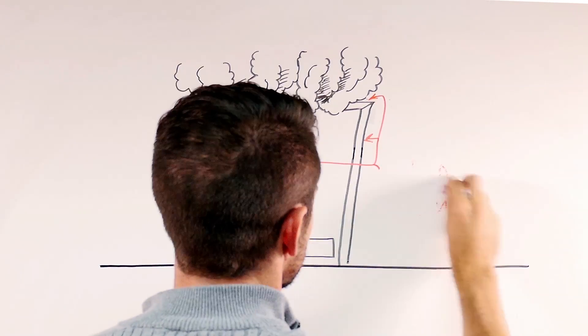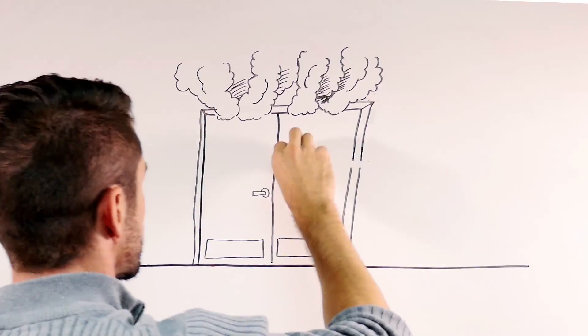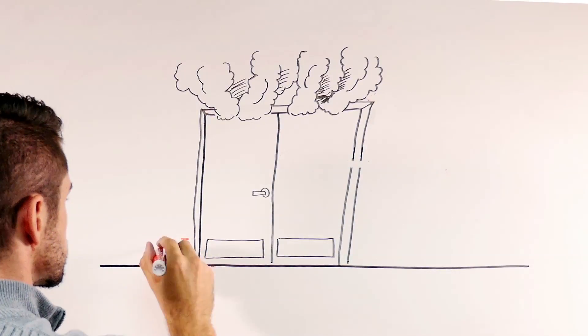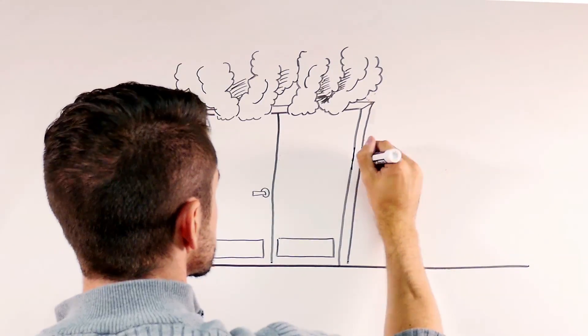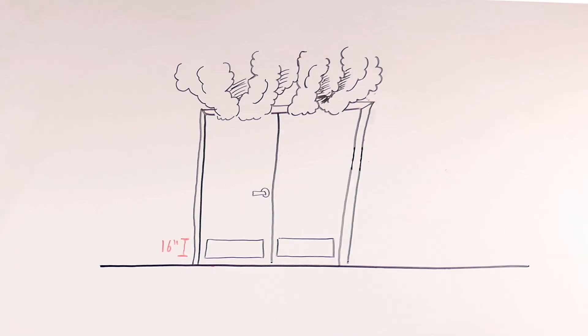Protection plates on fire doors can be installed on the bottom 16 inches of a fire door, but larger plates could affect the performance of the door during a fire. Plates that extend above the 16 inch area must have a label indicating that they are acceptable for use on a fire door.